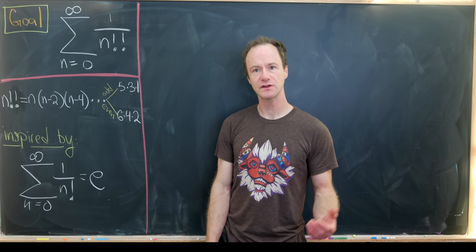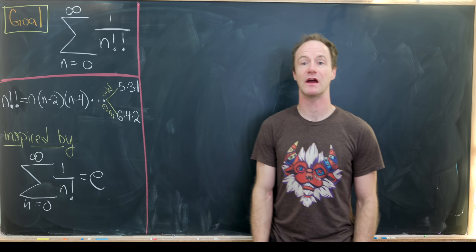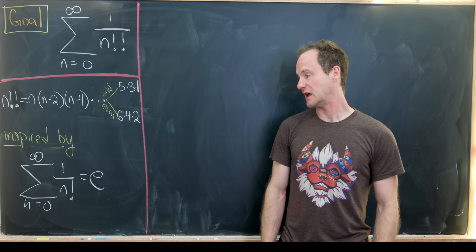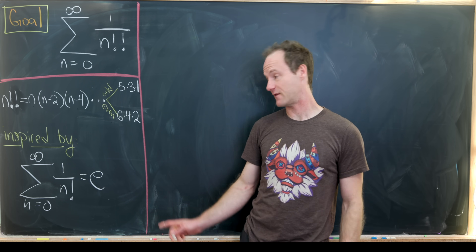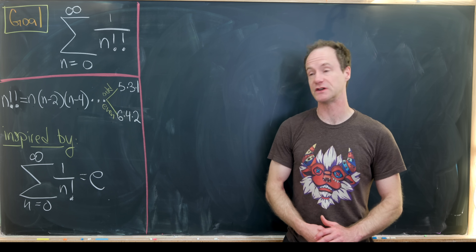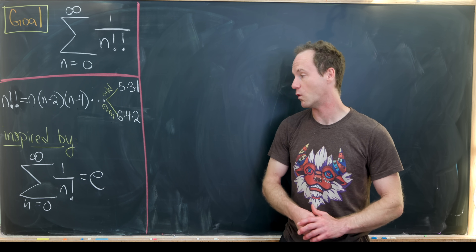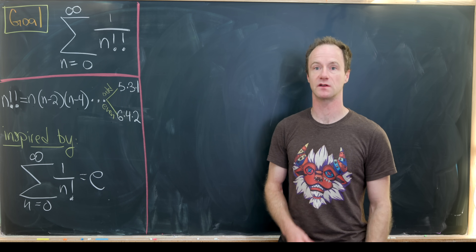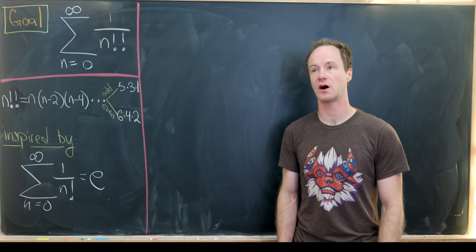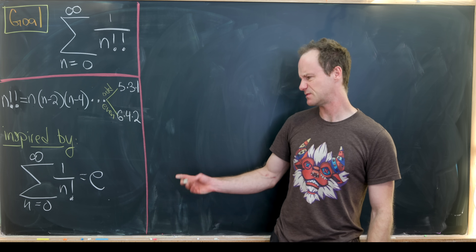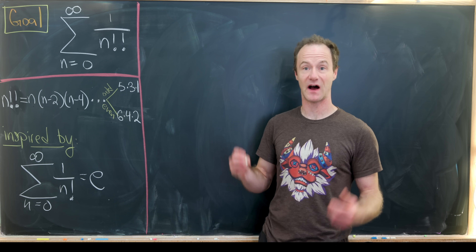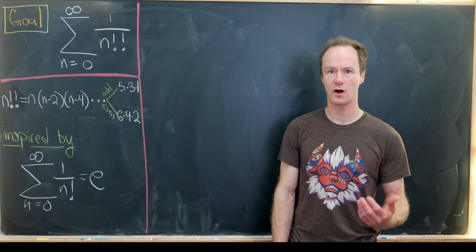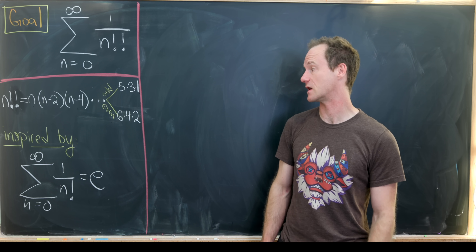I'd also like to point out that this is inspired by Euler's constant. In fact, we have the sum as n goes from 0 to infinity of 1 over n factorial is equal to Euler's constant, which we often call e.